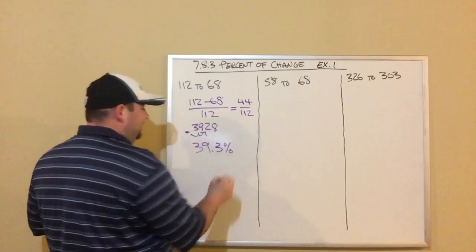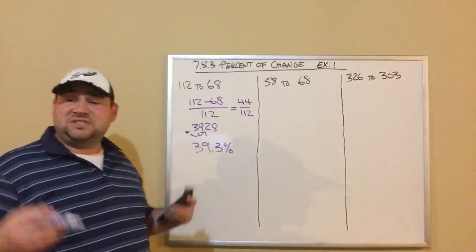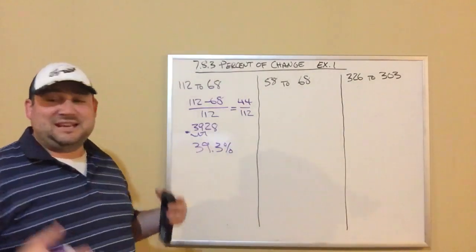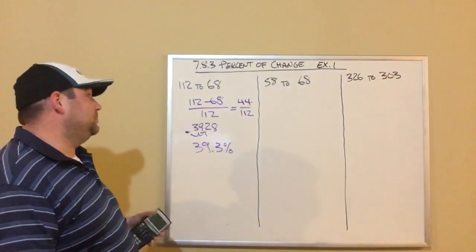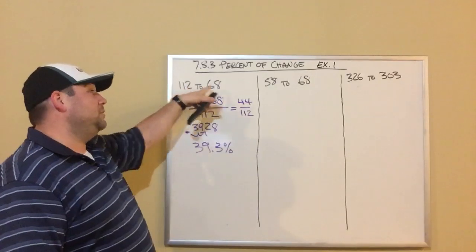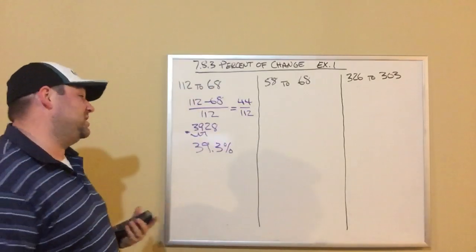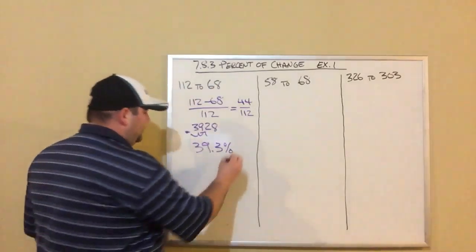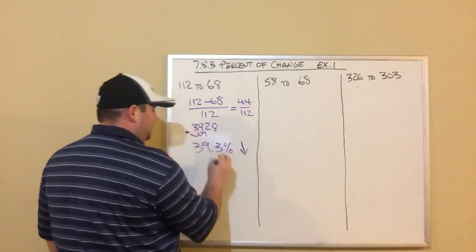I write the percent. And then the final step is you need to say if it's a percent increase or a decrease. It's fairly simple to figure out. You just look at the number. Did it go up or down? We started at 112. We went down to 68. So it's a percent decrease. You could write the word decrease, or I'm totally fine with just an arrow down like that.